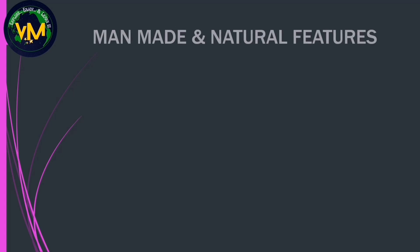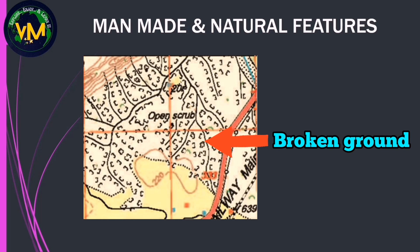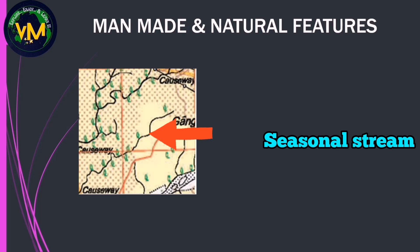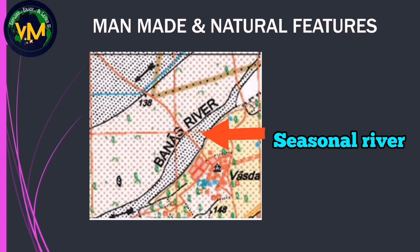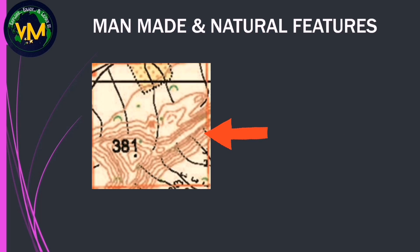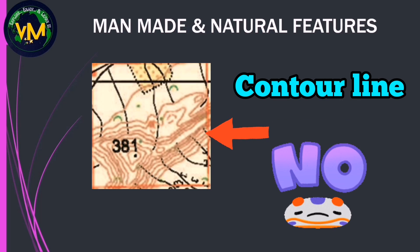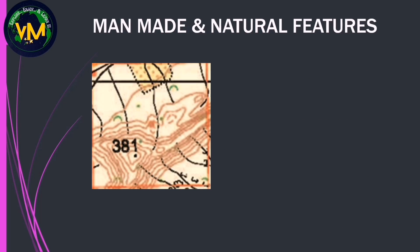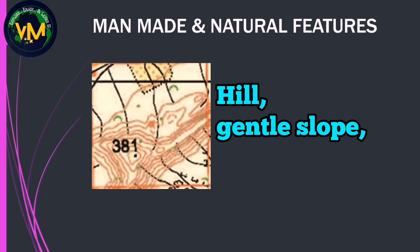Next we move on to man-made and natural features. The natural features include broken ground, seasonal streams, seasonal river, and plain land. But when you see a contour line, don't write 'contour line' — instead write the feature represented by the contour line, like hill, gentle slope, or steep slope.